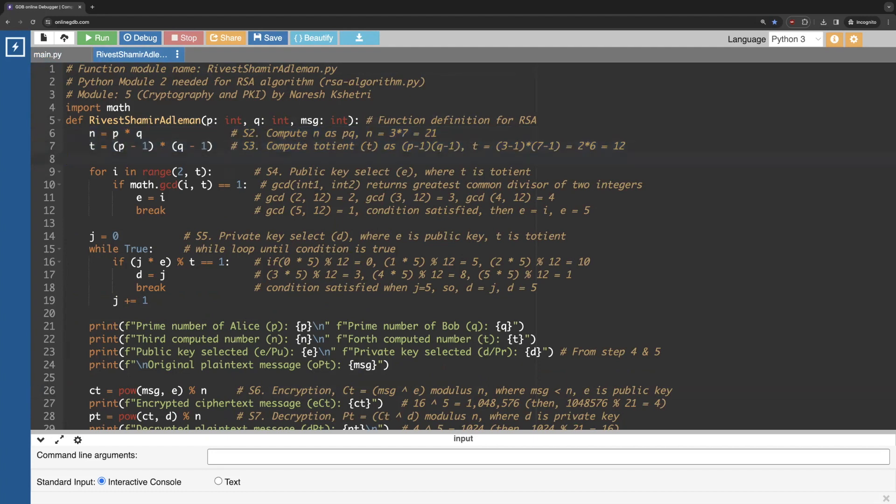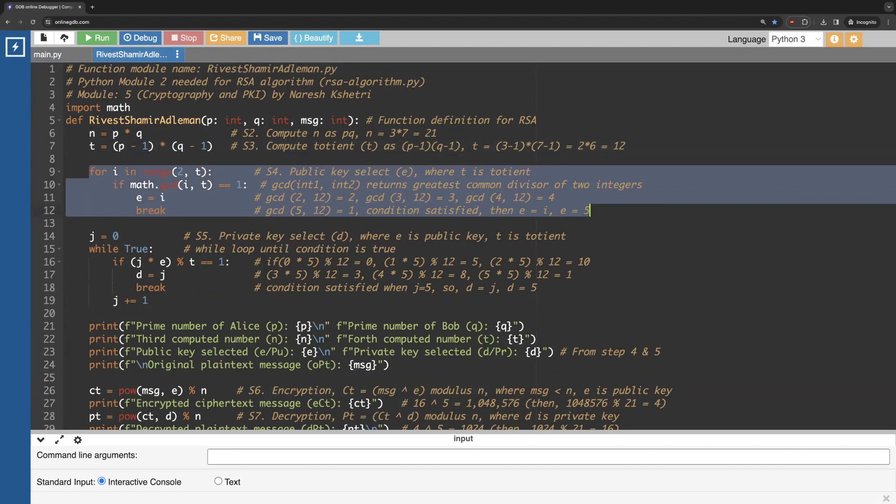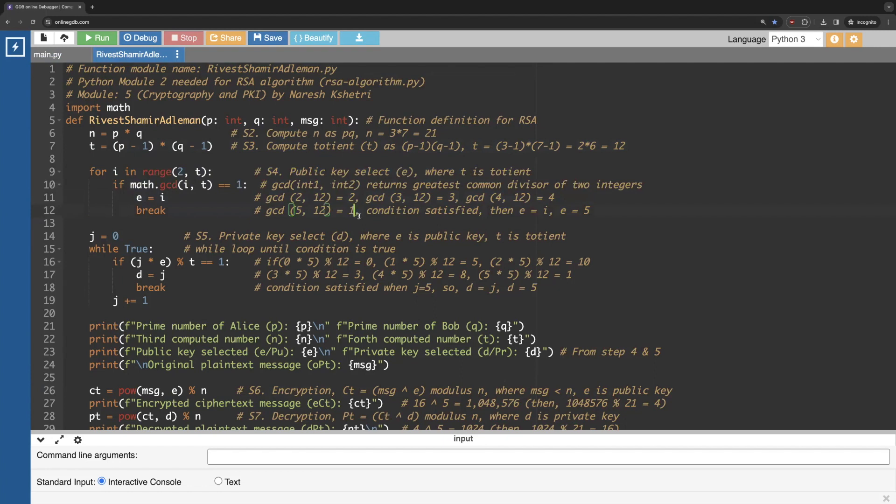Then only comes GCD which means we are computing the public key. So the public key E where T is already the totient. That means we are going in the range of 2 and T. So we already know range 2 and 12. We apply the condition over here. So gives the greatest common divisor of the two integers, 2, 3, 4 and when it comes to 5, the condition is satisfied. The E is provided as I, that means equal to I, and we break outside of the loop. In this way we get public key.